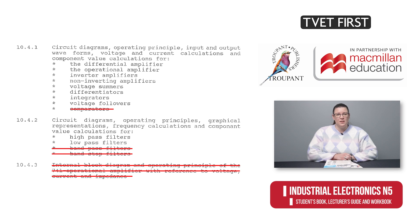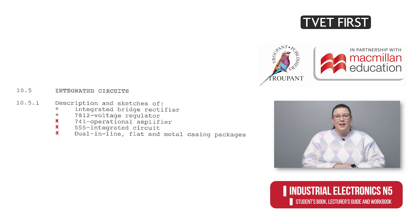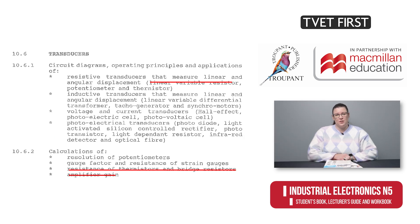Band pass or stop filters and the 741 operational amplifiers are not mentioned. In the new Module 4, the 741 operational amplifiers, 555 integrated circuits, and dual inline, flat and metal casing packages are not mentioned. Also, in the first category of transducers, namely resistive transducers, the linear variable resistor is not specified in the new curriculum. Calculations of the resistance of thermistors and bridge resistors, as well as amplifier gain, are no longer required.